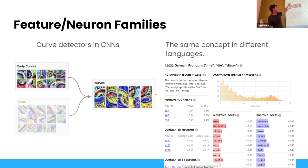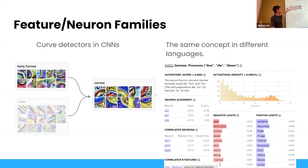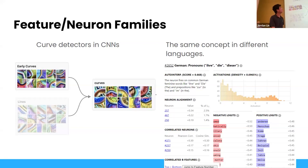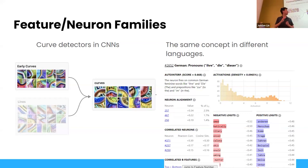We can also find neuron families — families of neurons that have very similar functions. Once we find a circuit, it's easy to find circuits with similar properties throughout the network. In a CNN, curve detectors are one neuron family — each curve detector is like another rotated version. Once you find one, you can look for other neurons that activate strongly on rotated versions of the same image. Similarly, inside transformers, we can find features representing the same concept in different languages — German pronouns, English pronouns, Dutch pronouns.